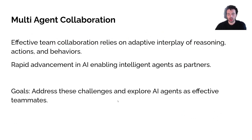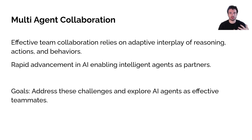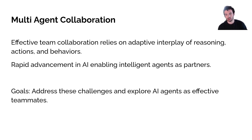Let's talk about multi-agent collaboration. Multi-agent collaboration is the idea of multiple agents working together to solve tasks, and often effective team collaboration relies on adaptive interplay of reasoning, actions, and behaviors that are really important. The rapid advancement recently in AI has enabled us to have intelligent agents as partners, especially in human-agent collaboration teams.